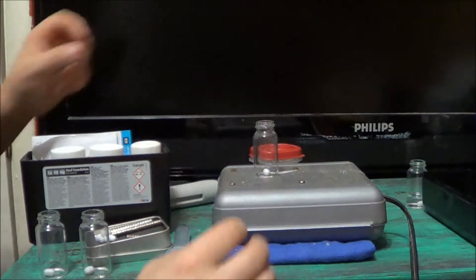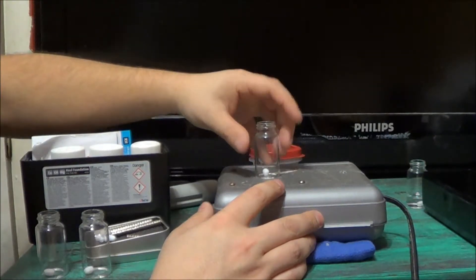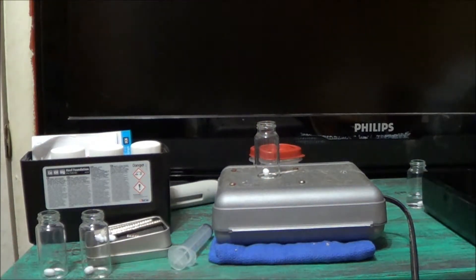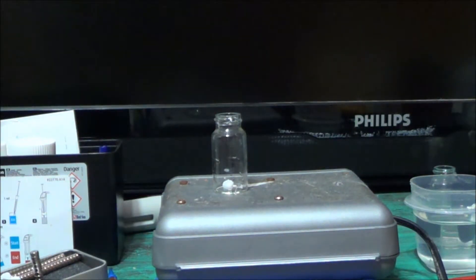We're going to center it up on top of the magnetic stirrer. All right, so our first test is actually going to be alkalinity.